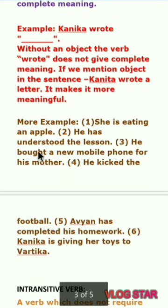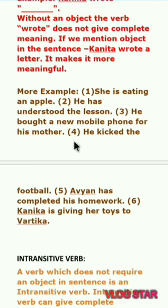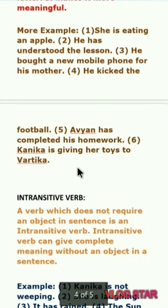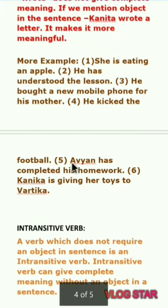More examples: 'She is eating an apple' — here 'eating' is a transitive verb and the object 'an apple' is present, so it gives complete meaning. 'He has understood the lesson,' 'He bought a new mobile phone for his mother,' 'He kicked the football,' 'Avyan has completed his homework,' 'Kanika is giving her advice to Vartika' — so these are the examples of transitive verb.